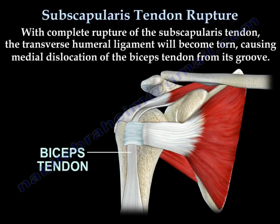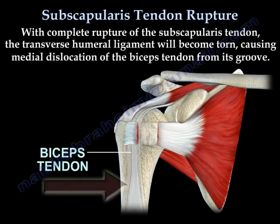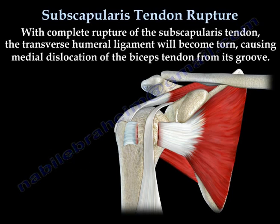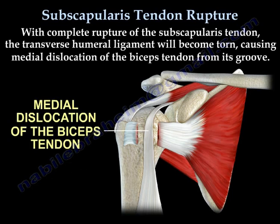With complete rupture of the subscapularis tendon, the transverse humeral ligament will become torn, causing medial dislocation of the biceps tendon from its groove.